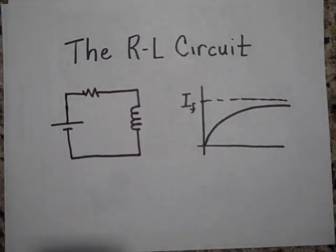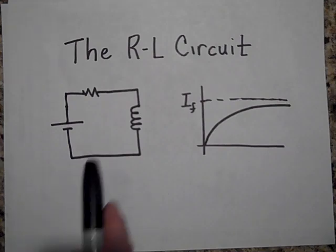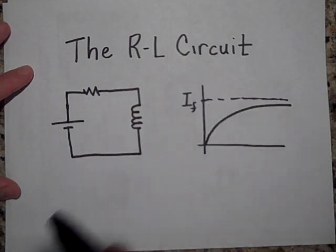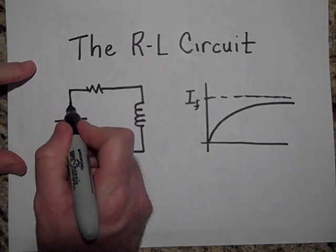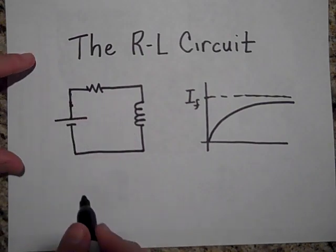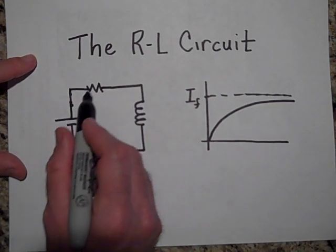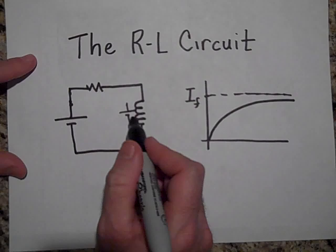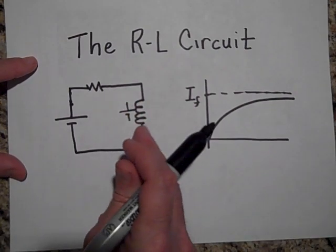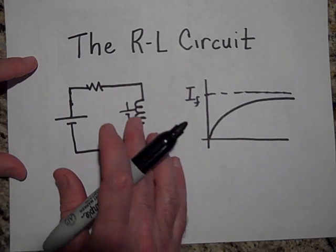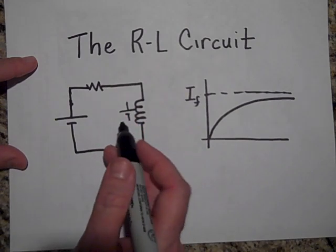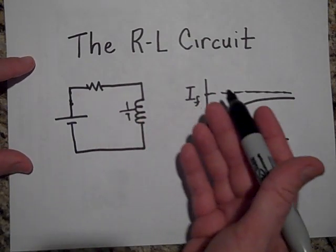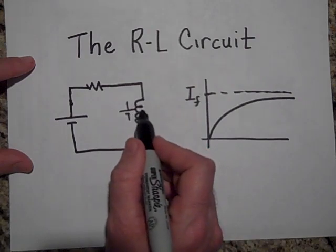I'd like to tell you about the RL circuit. When you close a circuit that has an inductor in it, it takes a little bit of time for the current to reach its final value. When you close a switch and try to change the flux, the inductor pushes back - it acts just like a battery pushing the other way, trying to stop the current from changing. Eventually it loses out and the current reaches a steady state, and the inductor ends up behaving just like a wire.